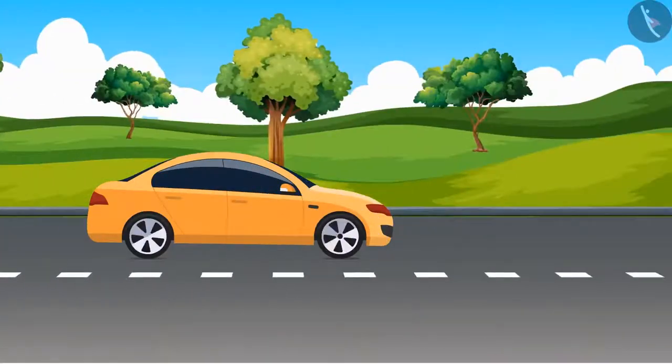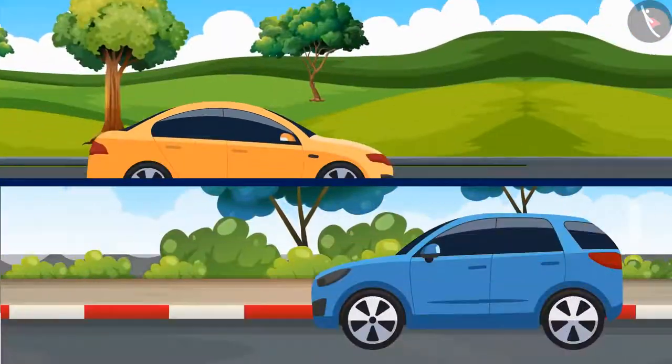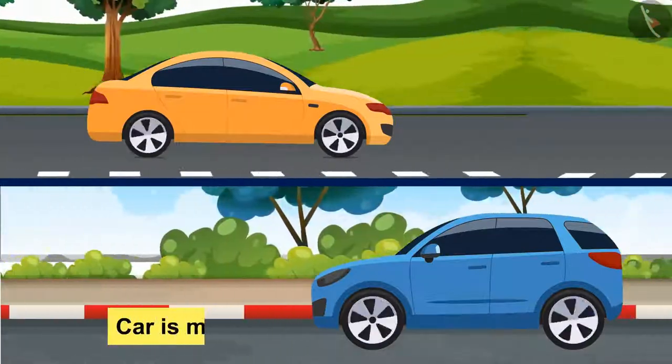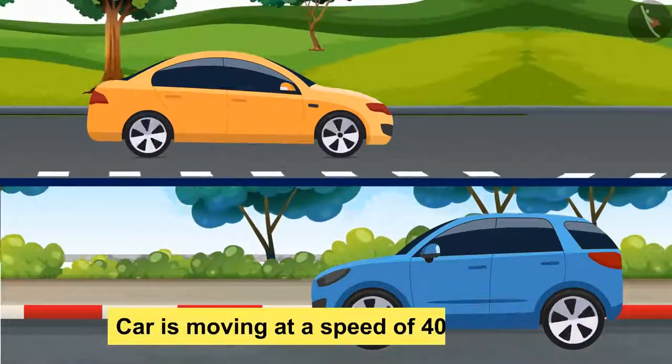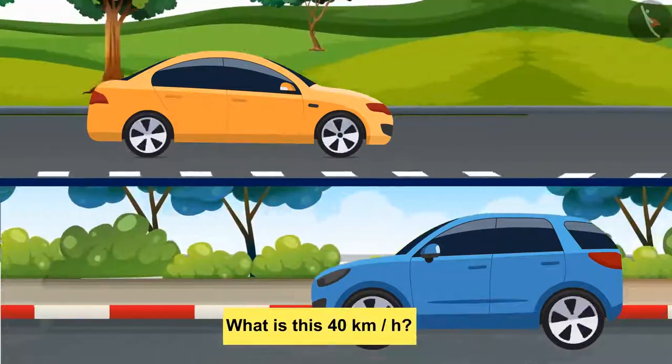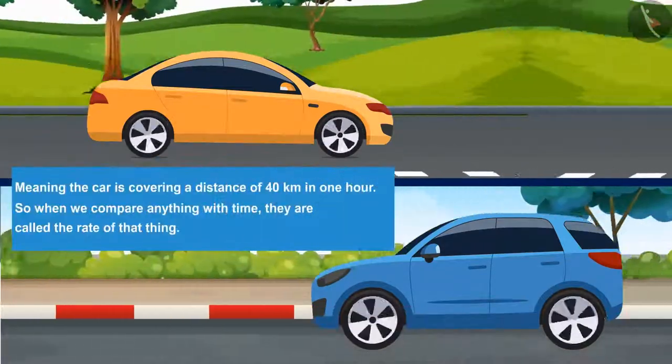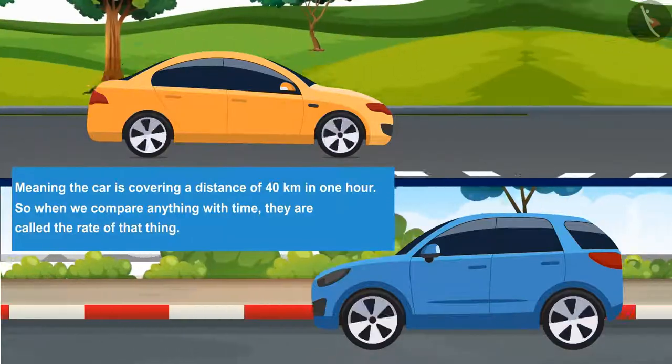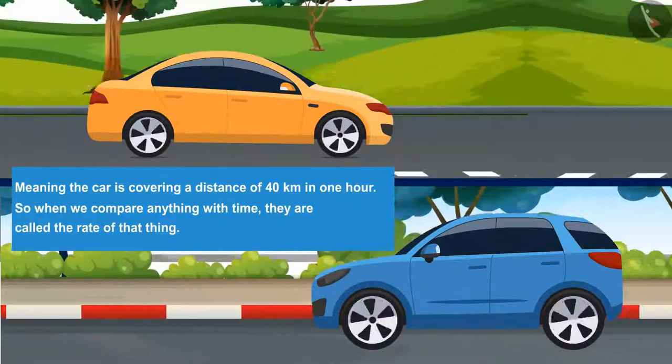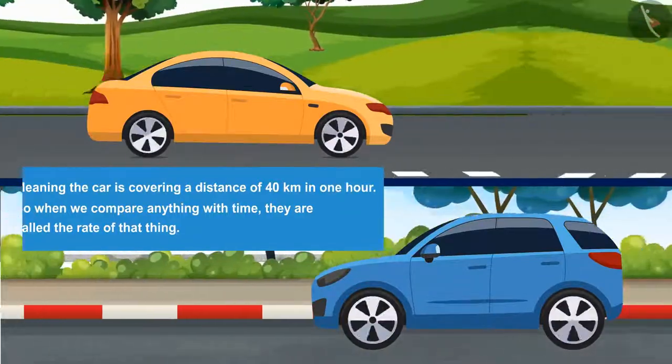You must have seen a moving car. Some cars move fast and some slow. We also say that the car is moving at a speed of 40 km per hour. But what is this 40 km per hour? Meaning the car is covering a distance of 40 km in one hour. So when we compare anything with time, they are called the rate of that thing.